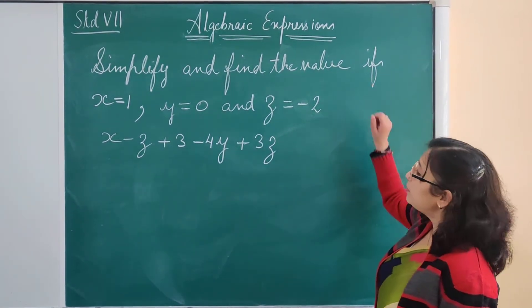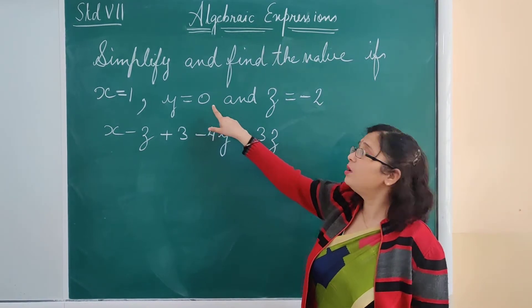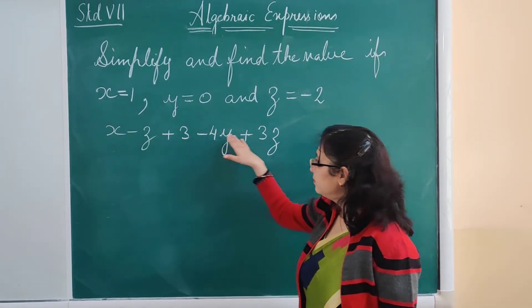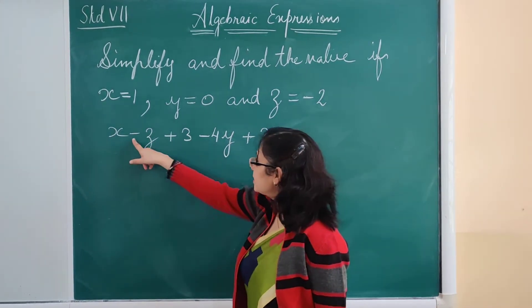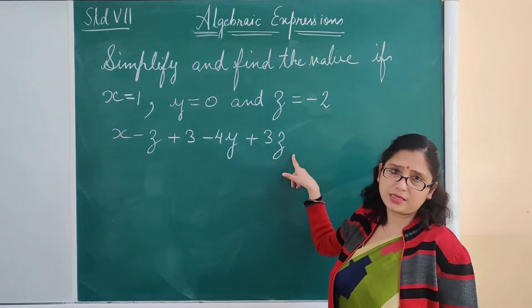Simplify and find the value if x equals 1, y equals 0, and z equals minus 2. This is an algebraic expression: x minus z plus 3 minus 4y plus 3z.